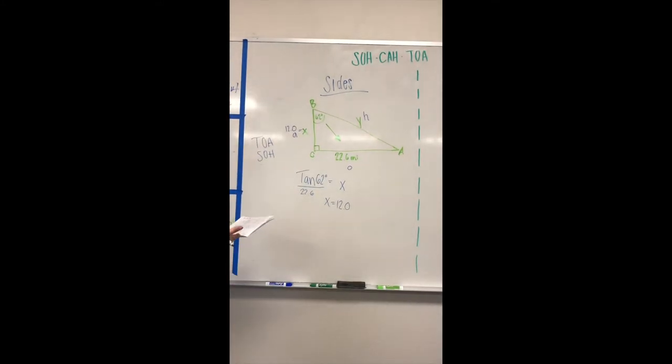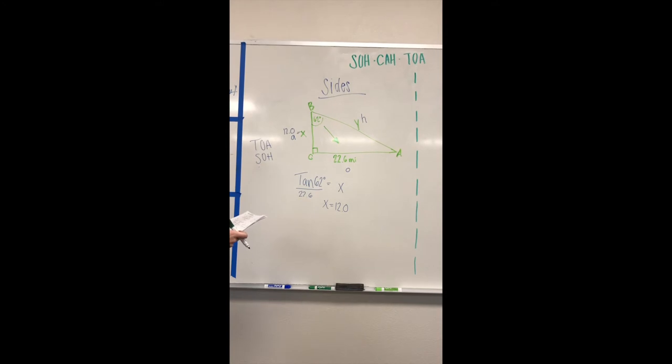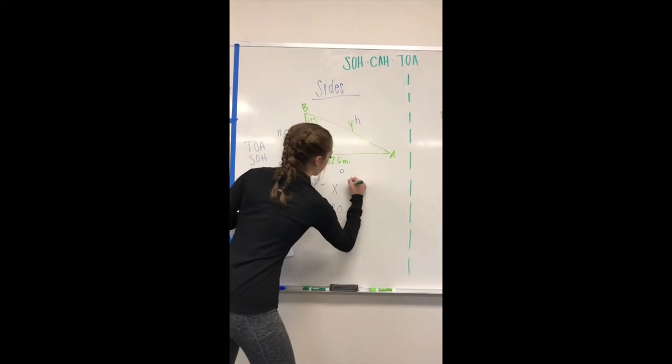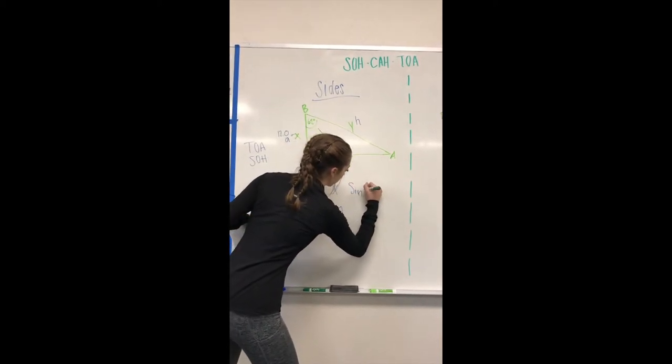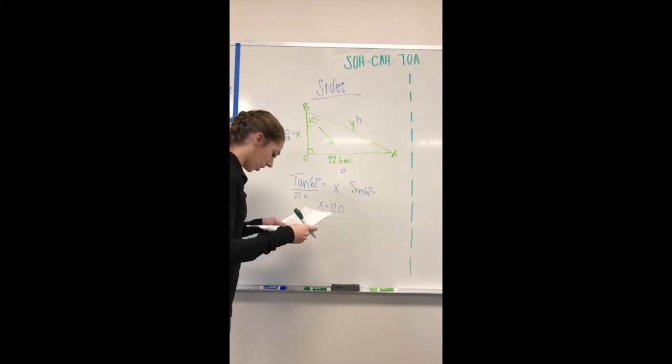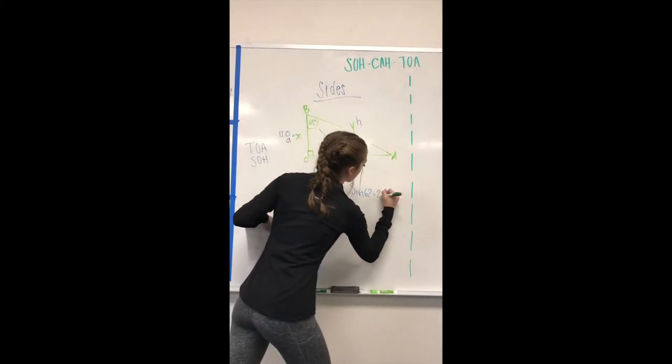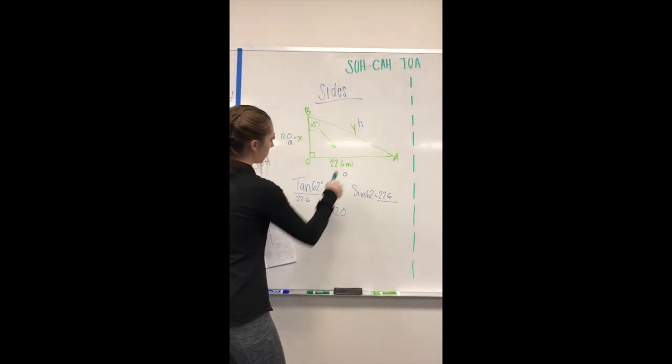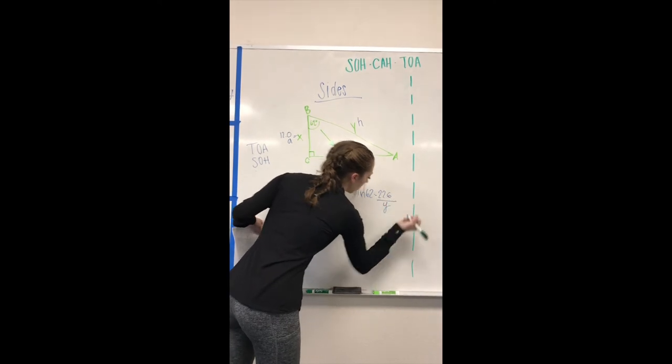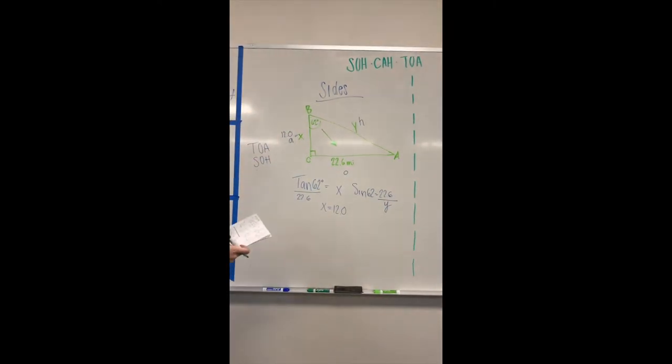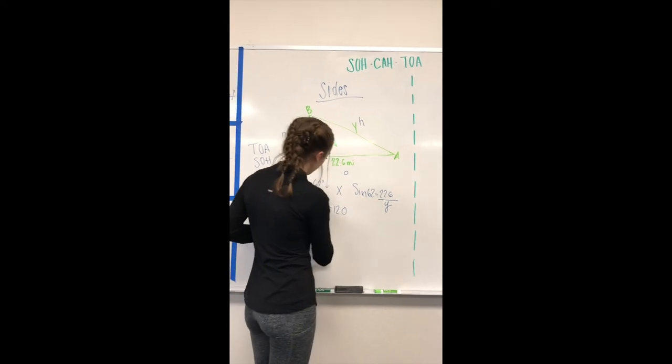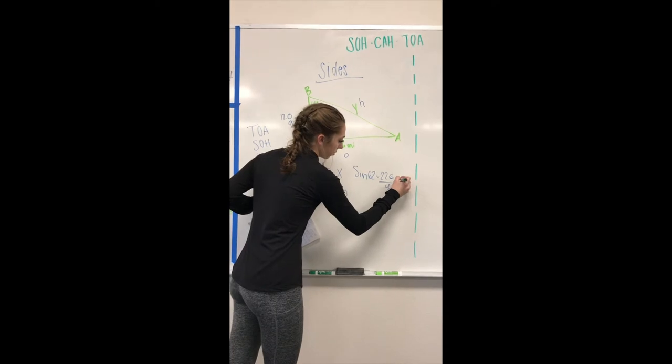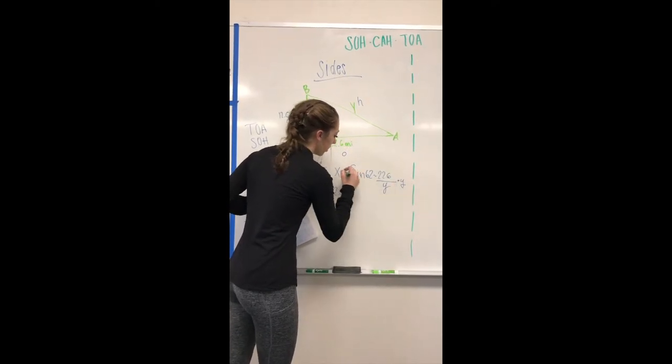Once you know that, the next one you would do is sine because you have opposite over hypotenuse. You do sine 62 equals 22.6 over y, which is here because you're trying to find that side. After that, you basically do the same thing as we did with tan.